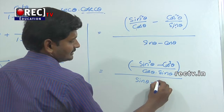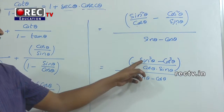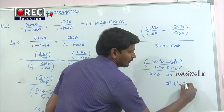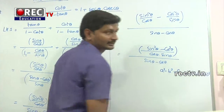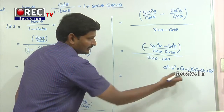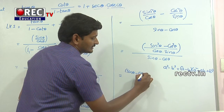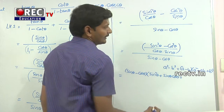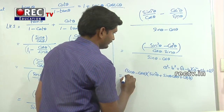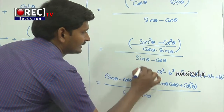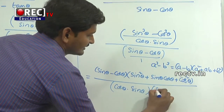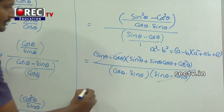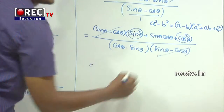Now apply the formula: a³ minus b³ equals (a minus b)(a² plus ab plus b²). So sin³ θ minus cos³ θ equals (sin θ minus cos θ)(sin² θ plus sin θ cos θ plus cos² θ), divided by cos θ into sin θ. The (sin θ minus cos θ) in the numerator and denominator cancel out.